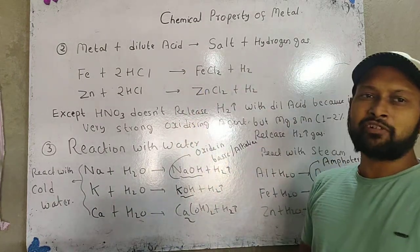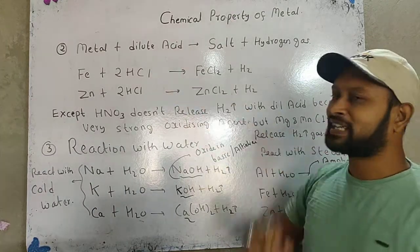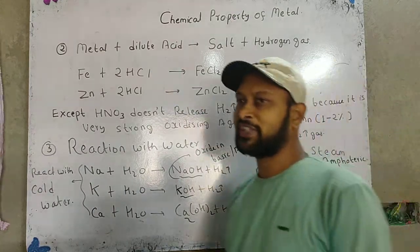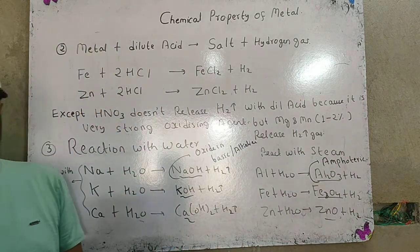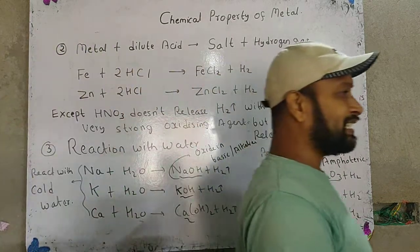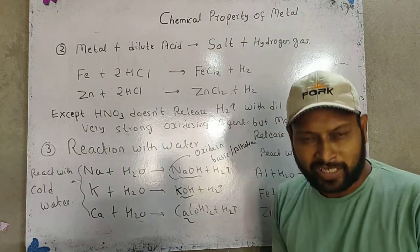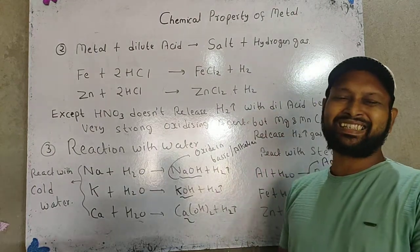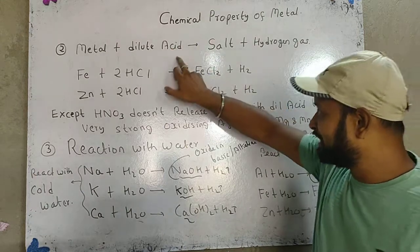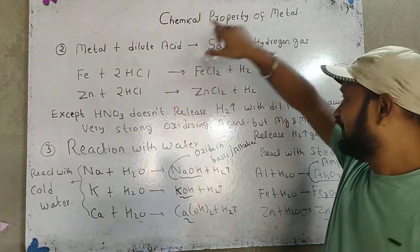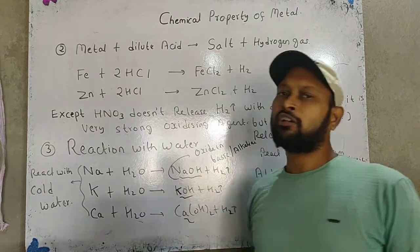Today we are going to discuss about the second chemical property. When the metal reacts with a direct acid, it forms a salt and it releases hydrogen gas. In the second chapter we already learnt about acids and bases — what happens when the metal reacts with the acid. When the metal reacts with a direct acid, it forms the salt and it releases hydrogen gas.